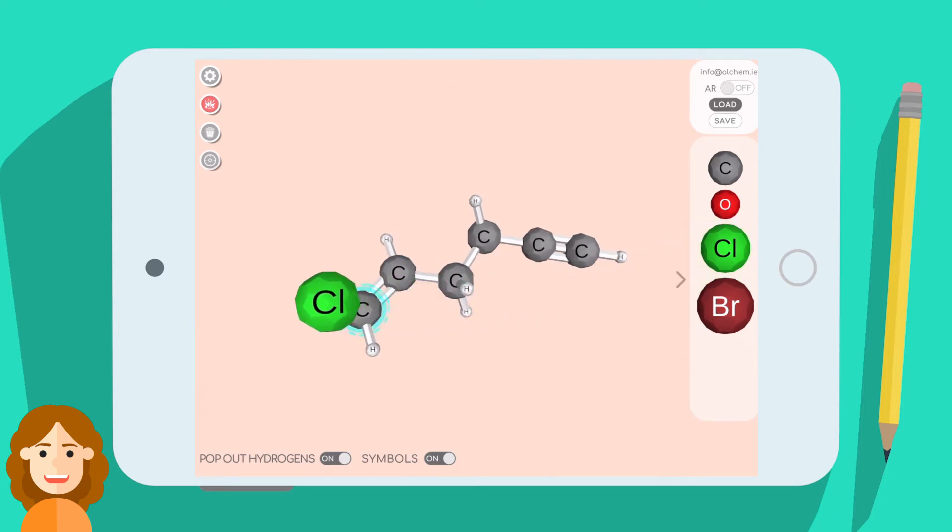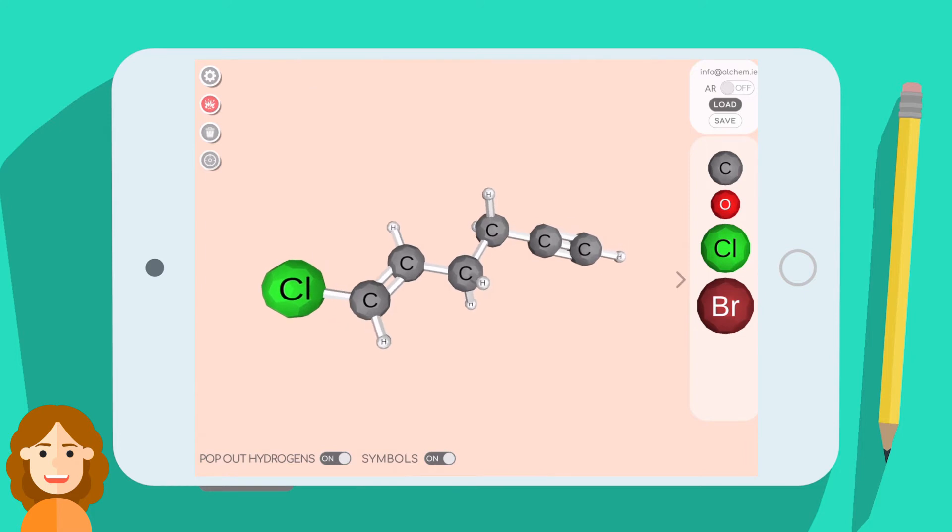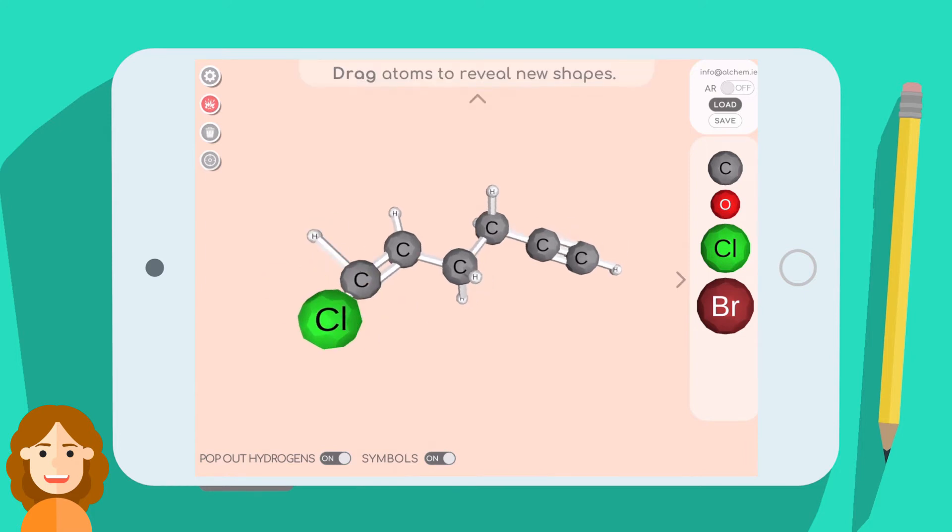While we have a double bond here, let's talk about E and Z alkenes. You can easily switch between configurations by dragging a substituent to the other side, opposed to having to remove and replace atoms.